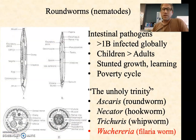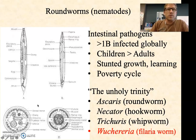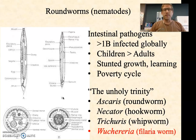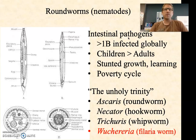Another name for roundworms is nematodes. They're cylindrical, as you can see here in cross section. There's a reproductive system, an excretory system, a circulatory system — these are in fact animals, and so they're highly complex. These are intestinal pathogens. They're very much overlooked because in developed countries like the United States, UK, Australia, or Japan they have been all but eradicated, and so because they're relegated to the tropical developing world, they've really been neglected in a lot of ways.